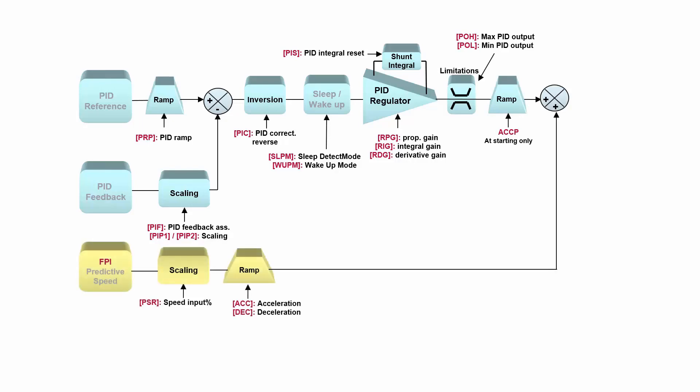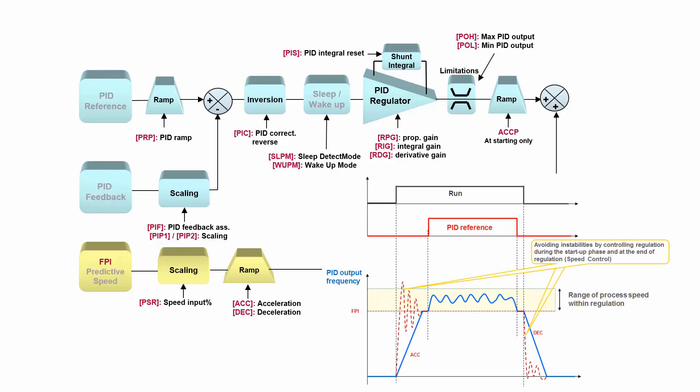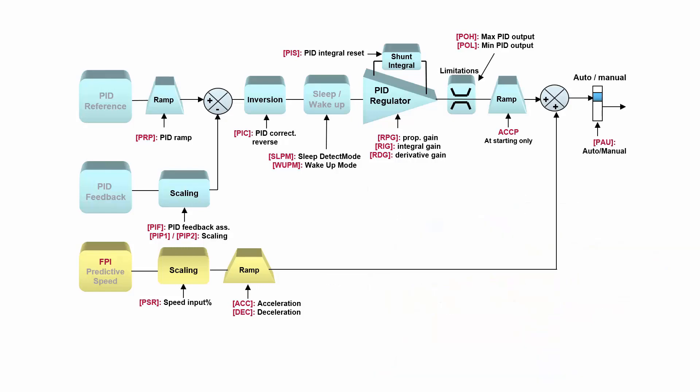Now the summing point is for predictive speed, which we can scale and ramp. And why do we use this predictive speed? We use it to avoid certain instabilities in our system, especially if we have a certain speed range where we can regulate, and in between we don't need the PID regulator to work, but just ramp up and ramp down from this range. And then the output of the summing point enters the drive.